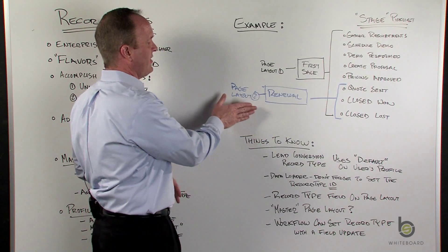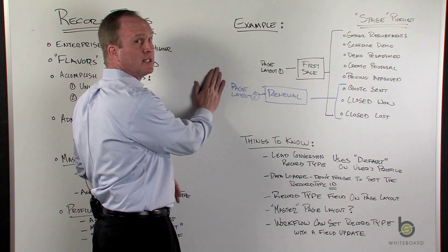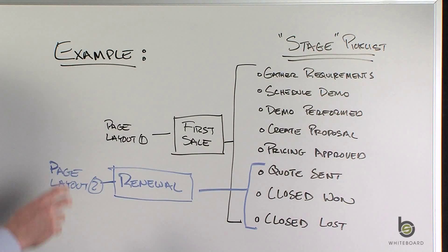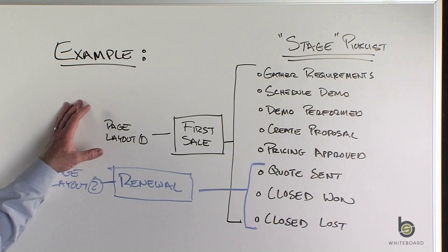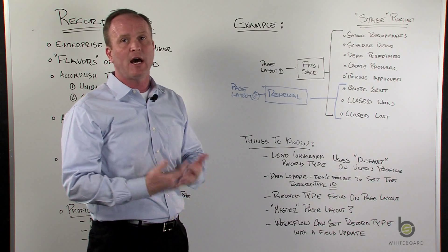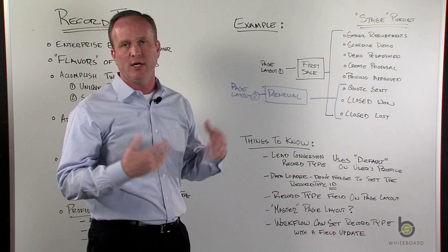So my renewal process only has three picklist values. If I would like to, I could have a unique page layout for my renewal process. I can have a unique page layout for my first sales process. So maybe in my first sales process, I have a lot more fields that I need to gather information. How the demo went, what product did I recommend, et cetera.